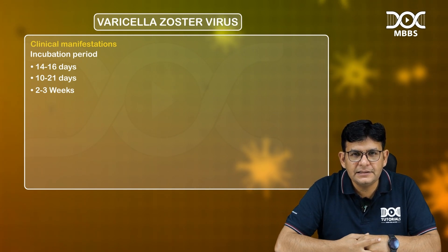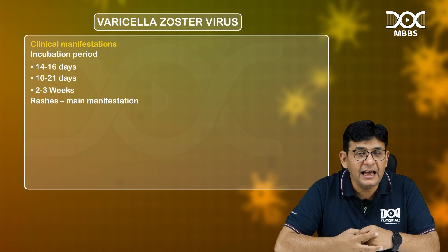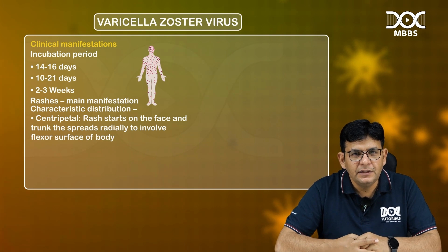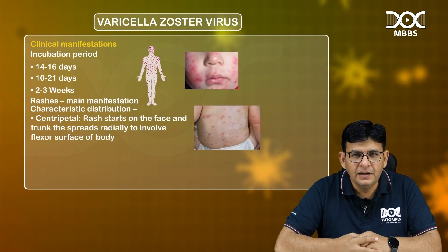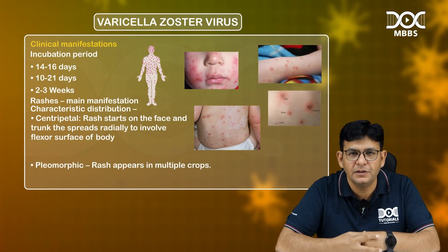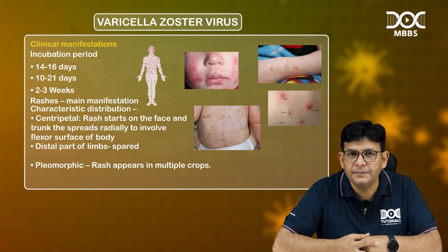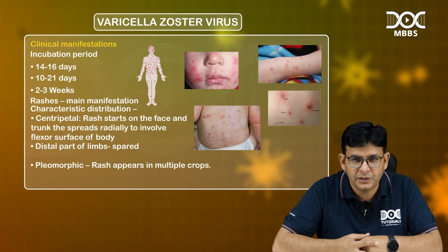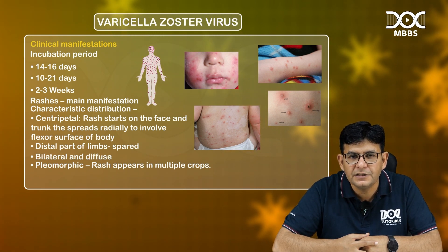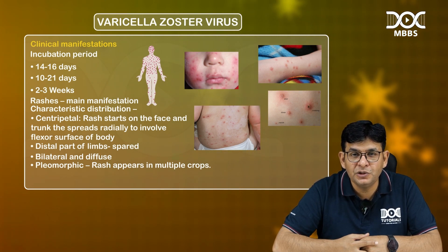The rashes are the main manifestation of chickenpox on which exam questions come. They have a characteristic distribution termed centripetal — they start on the face and the trunk and spread radially to involve the flexor surfaces of the body. The distal parts of the limbs are spared. This is a bilateral and diffuse distribution with centripetal distribution of rash.